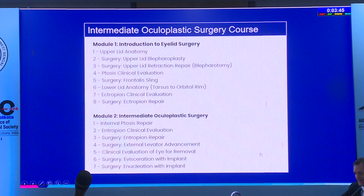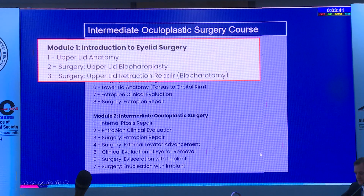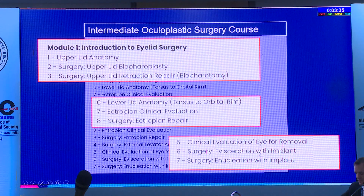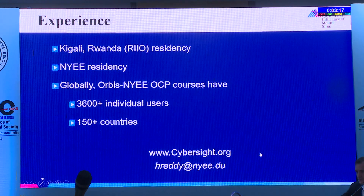The intermediate oculoplastic surgery course covers more advanced topics: all kinds of soft tissue surgery, lid surgeries, eye removal surgeries, and extensive clinical decision-making—teaching pathophysiology, such as whether ectropion has laxity or anterior lamellar shortening, rather than just teaching a single technique like tarsal strip. The course interactively teaches residents how to make these clinical decisions.